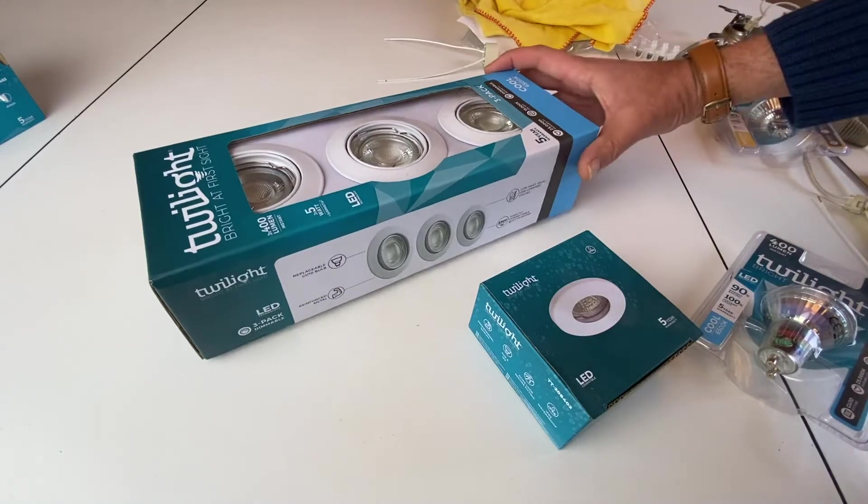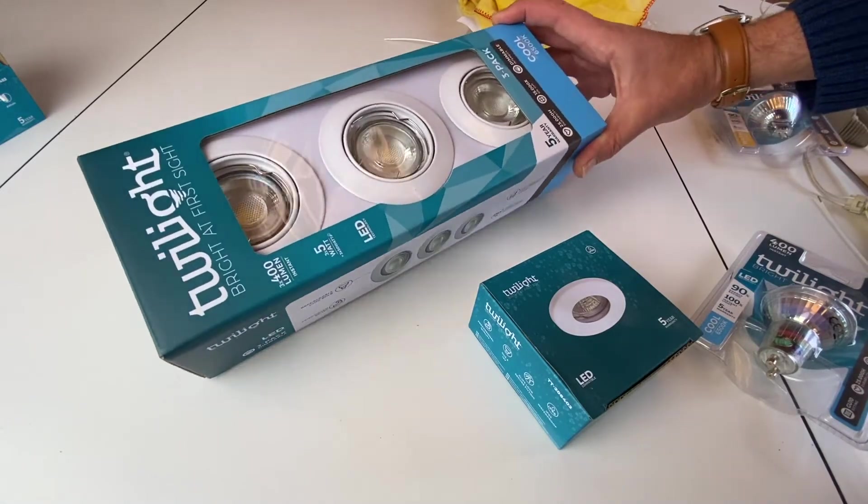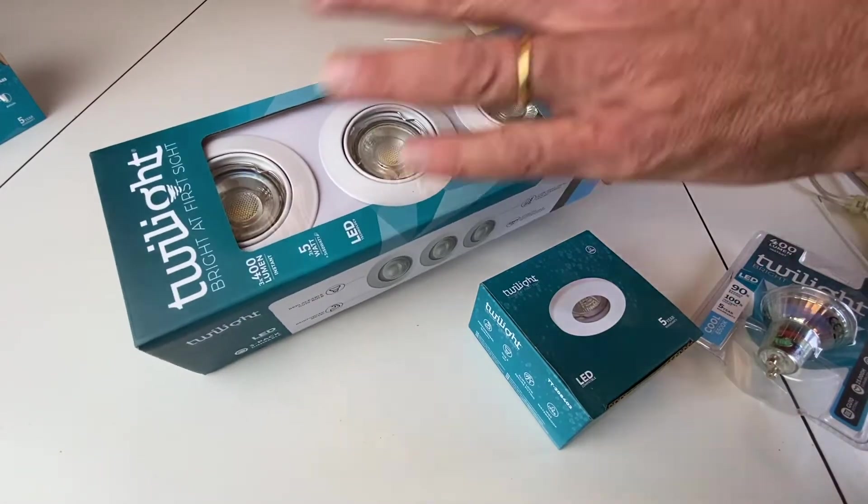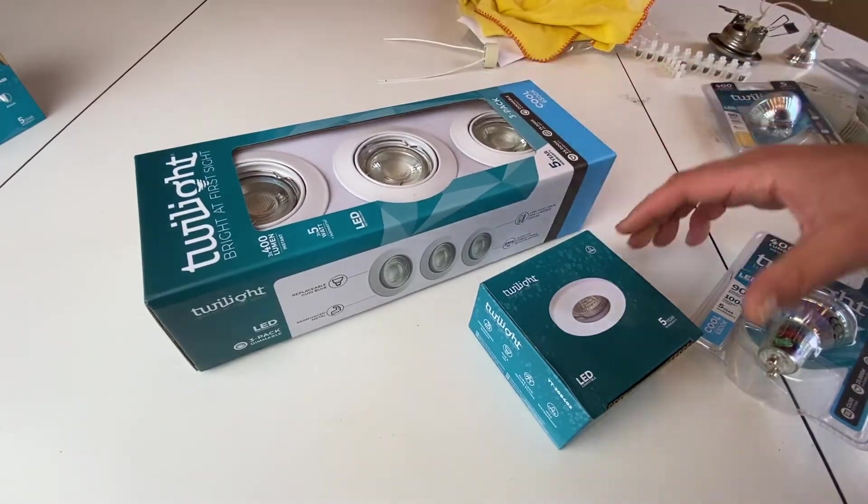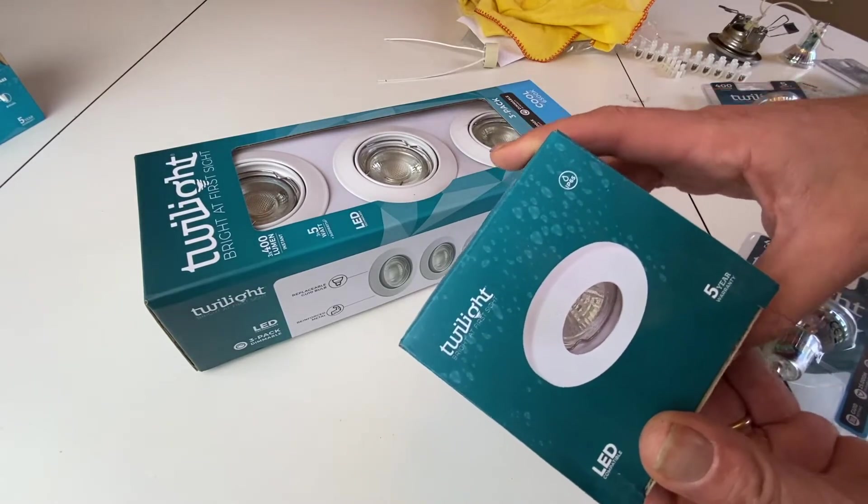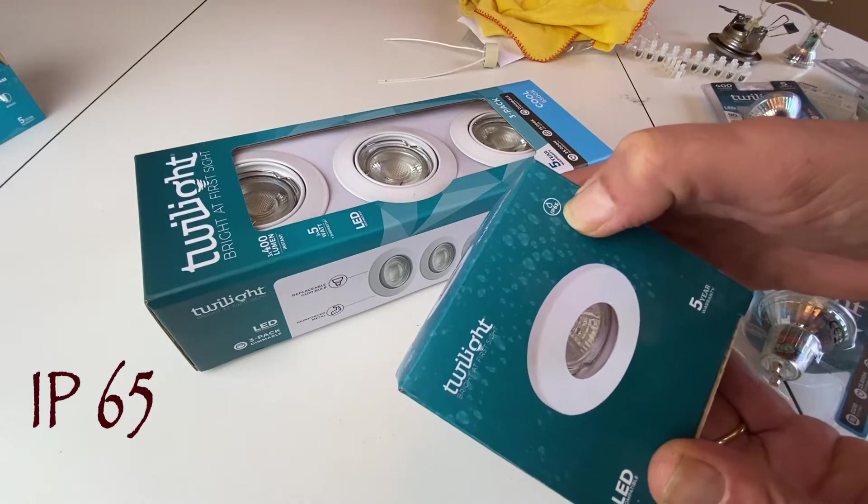Also to be noticed, for the spotlights for normal rooms meaning not wet rooms, there is nothing special written on it, whereas the spotlights for wet rooms are with this standard IP65.